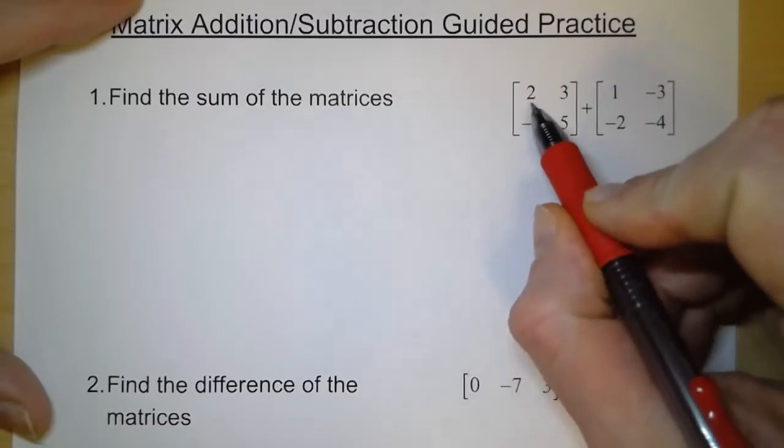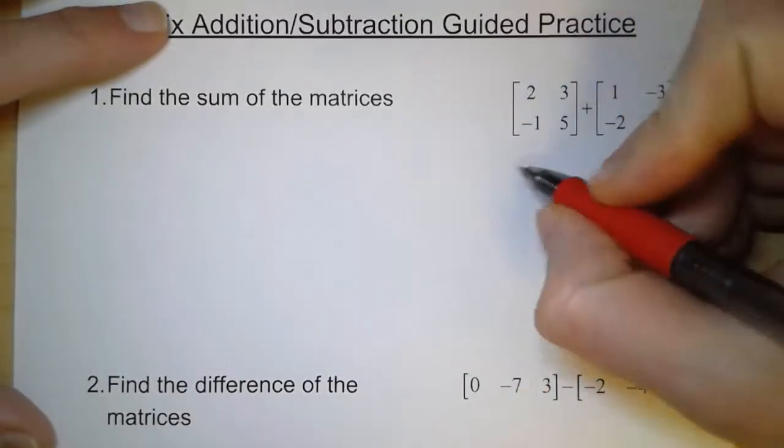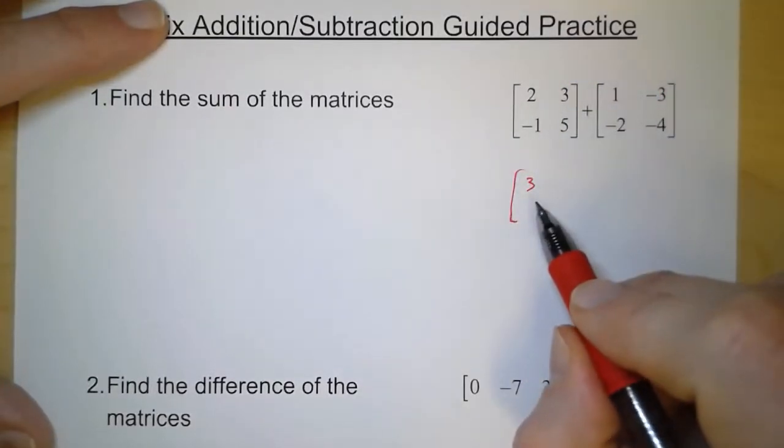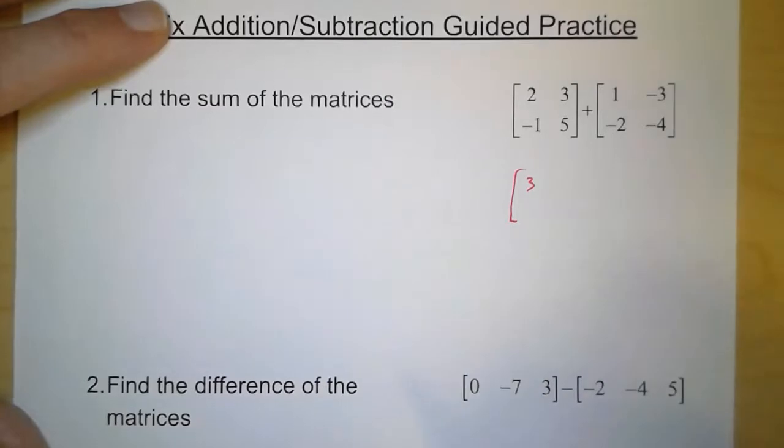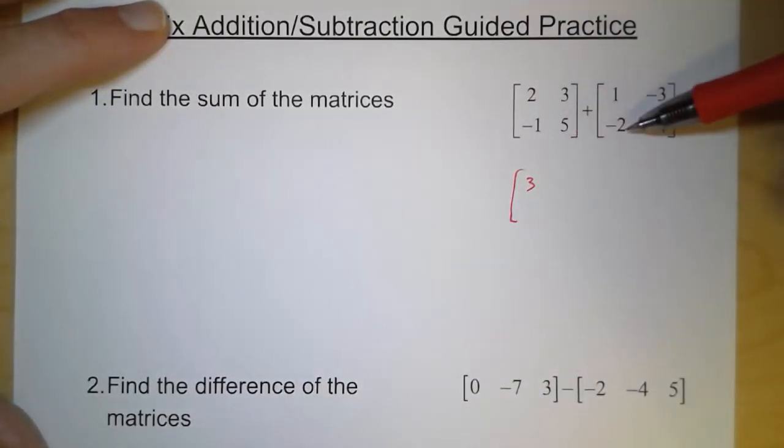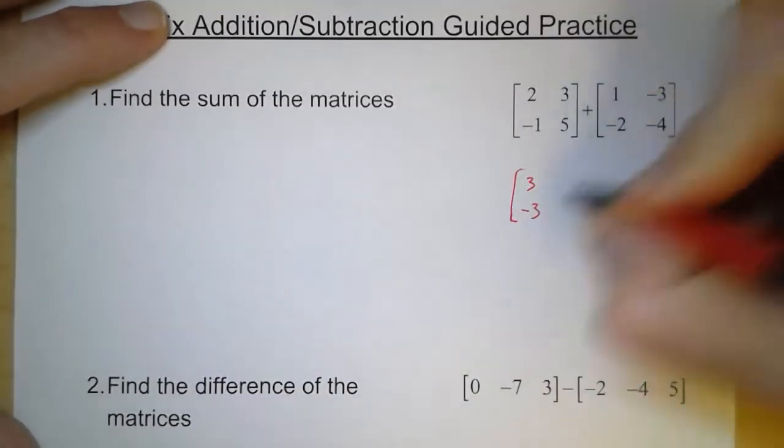So we have in the upper left hand corner, we have a 2 here and a 1 here. So we add them, and that gives us a 3 in the upper left hand corner of our answer. For the lower left hand corner, we have negative 1 and negative 2 that we're adding. So that's going to be negative 3.